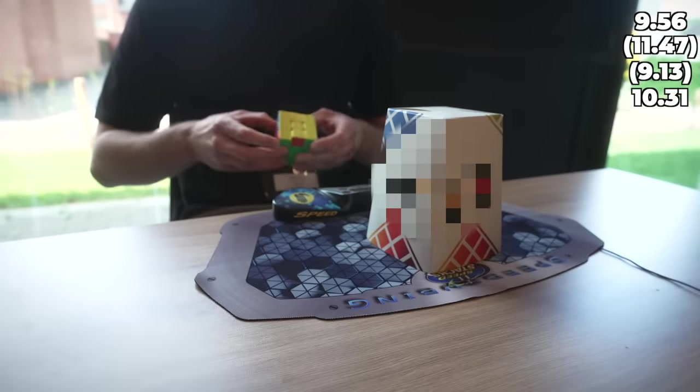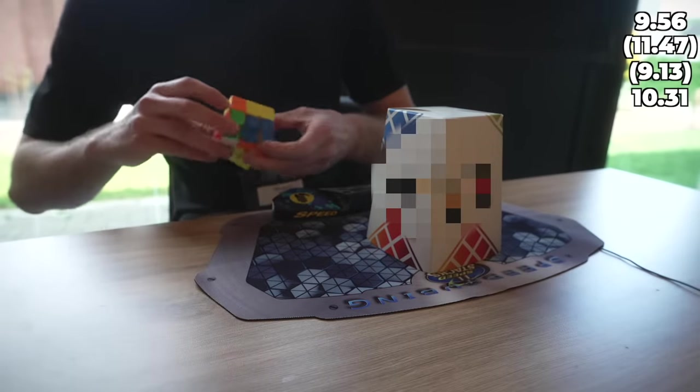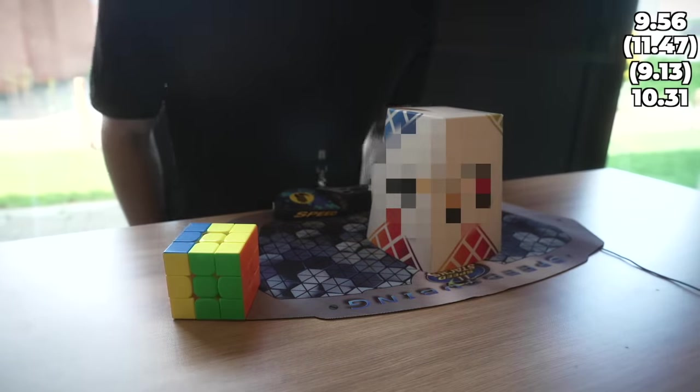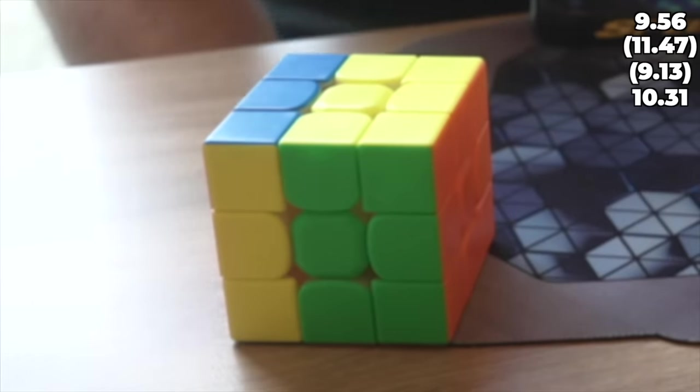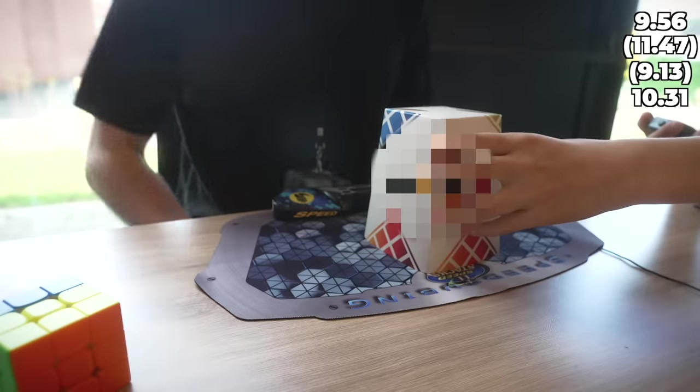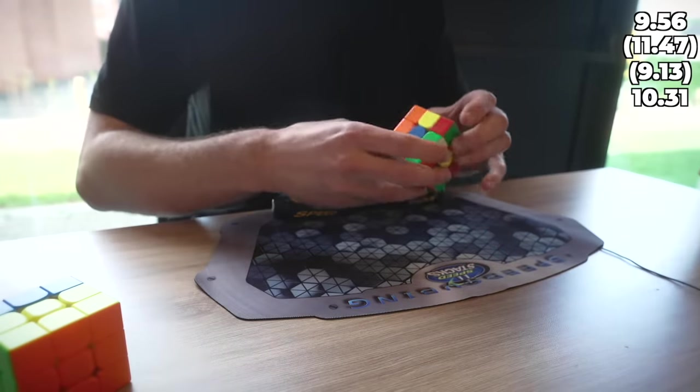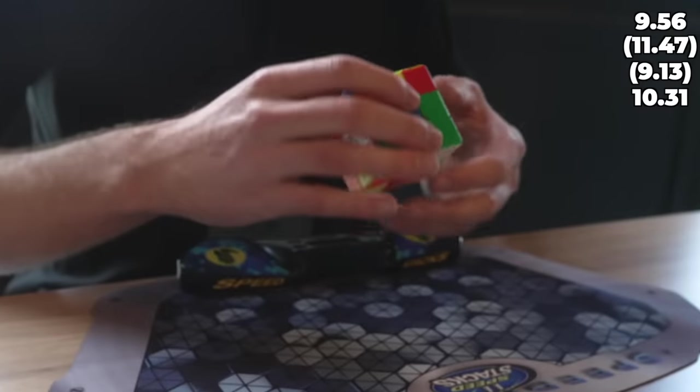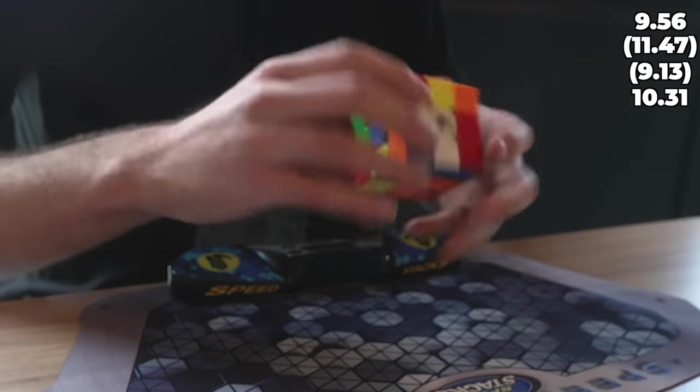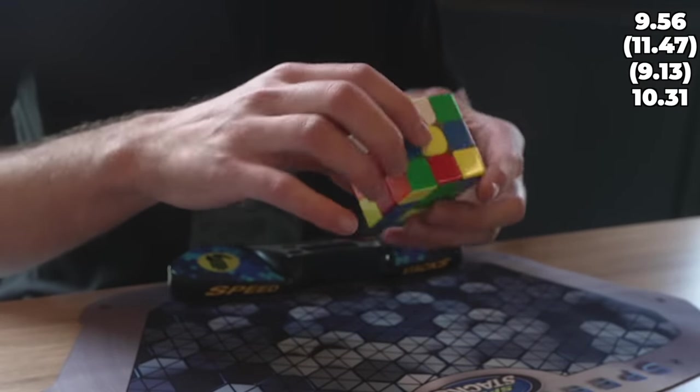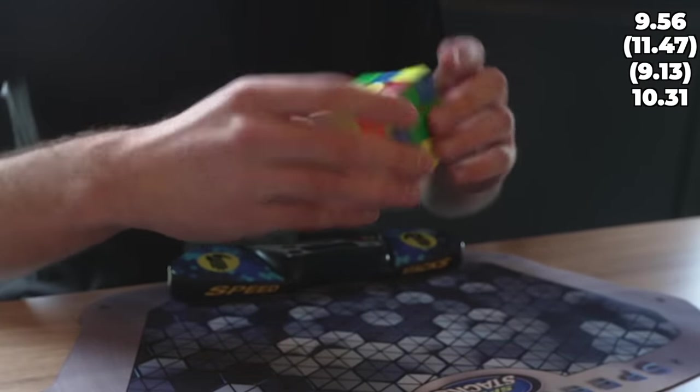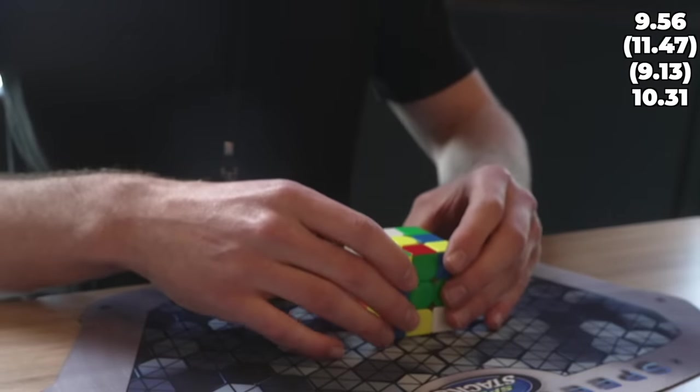Giving myself a plus two there during warm up, probably bad luck for this solve. I'm struggling to find a cross color right here which means that the scramble is not good. I ended up with white, I should have probably just gone for white earlier if I see it's a bad scramble.